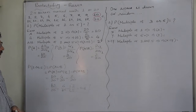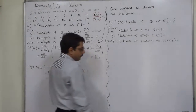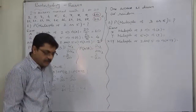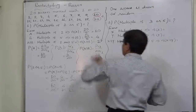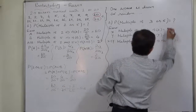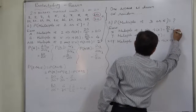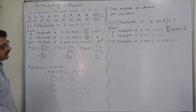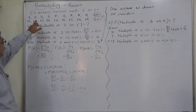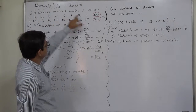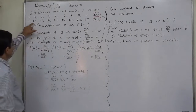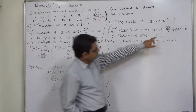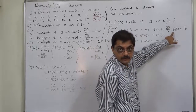The second case is almost similar — only the values change. What is the probability that the number on the drawn ticket is a multiple of 3 or 5? How many multiples of 3 are there in 1 to 20? 20 divided by 3 is 6.67, so we take only the integer part — 6 values: 3, 6, 9, 12, 15, and 18.